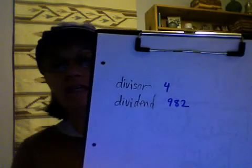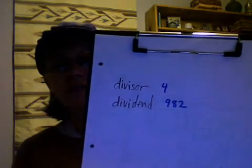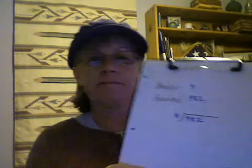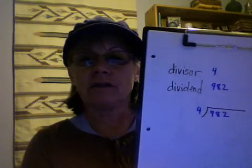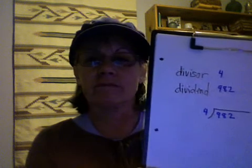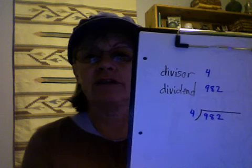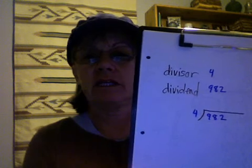The second problem for today has a divisor of 4 and a dividend of 982. When it's correctly set up to start solving, it would look just like this. How many 4's are there in 982?